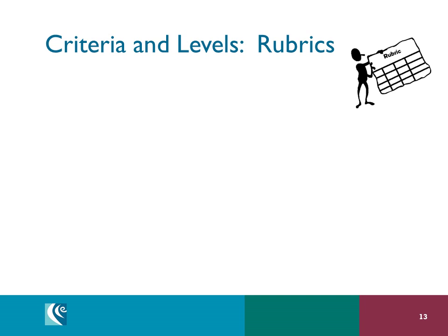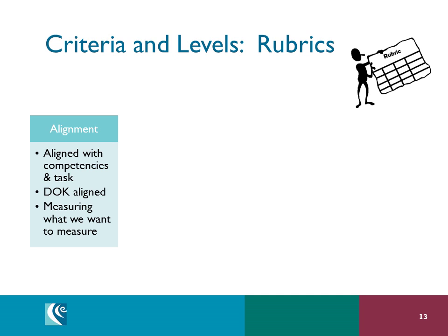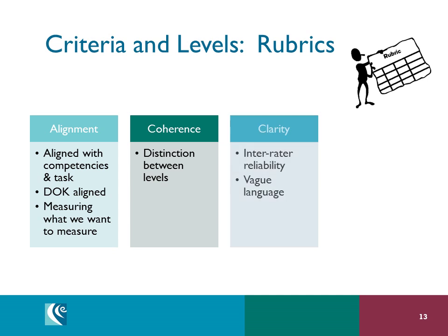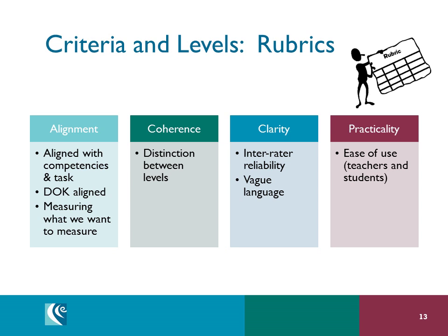Such qualities include alignment — what counts, and what the student sees in the rubric is what you will get. Coherence — are there clear and reasonable distinctions between the levels? Clarity — does everyone understand what is meant by the descriptors? And practicality — is it easy to use for teachers and students? Rubrics will be discussed more thoroughly in a separate module.